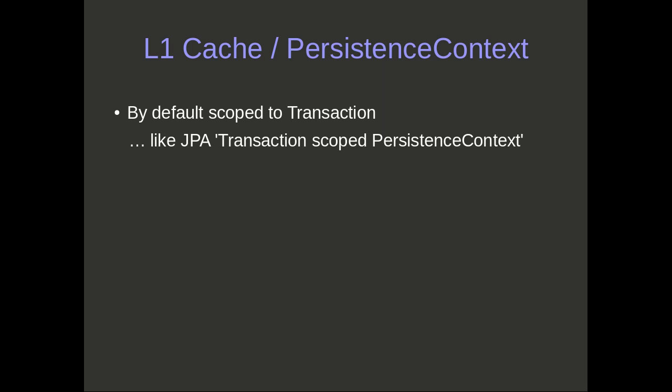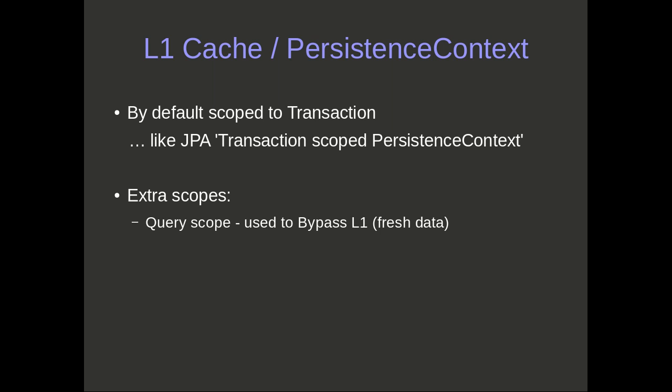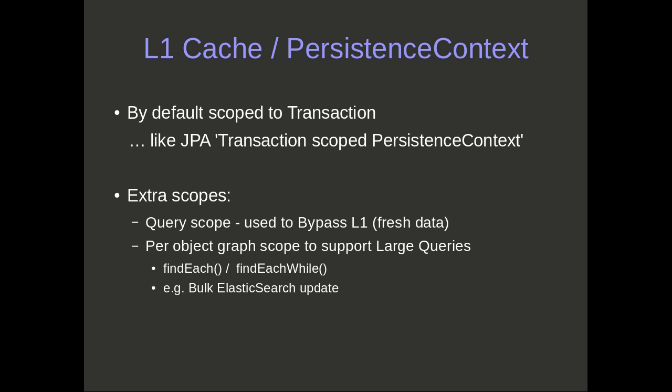In terms of eBean, with the L1 cache, by default it's scoped to the transaction. In JPA terms, if you're using a transaction-scoped persistence context, this is effectively the same. eBean does provide some extra scopes: a query scope, used to bypass the L1 cache mid-transaction, and a per-object-graph scope for very large queries — for example, a bulk Elasticsearch update pulling back thousands of object graphs, converting them to JSON. You wouldn't use find list there as it would blow out your memory. Ignoring those extra scopes, there's not much difference — we have an L1 cache scoped to the transaction.